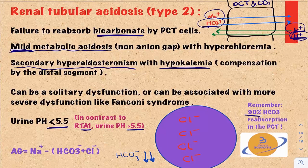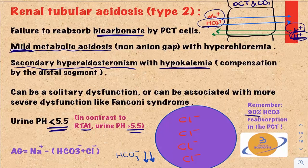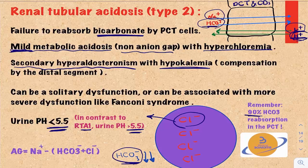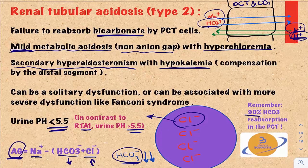This contrasts with renal tubular acidosis type 1, a defect in the distal segment, where urinary pH is greater than 5.5 — because if the defect is more distal, there is no time for compensation. So urinary pH in RTA type 2 is less than 5.5, and greater than 5.5 in type 1. Another important point: the mild metabolic acidosis in RTA type 2 is non-anion gap with hyperchloremia. Because bicarbonate is lost in the urine, chloride moves from inside the cell to outside in compensation. Since the anion gap formula is sodium minus the sum of bicarbonate and chloride, when bicarbonate decreases and chloride increases, the anion gap remains unchanged — hence non-anion gap with hyperchloremia.